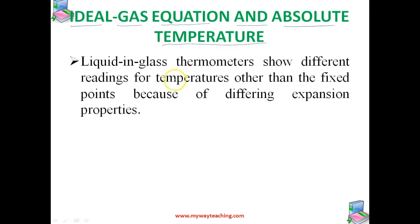Liquid in glass thermometers show different readings for temperatures other than the fixed points because of different expansion properties. A thermometer that uses a gas, however, gives the same readings regardless of which gas is used. Many experiments show that all gases at low densities exhibit the same expansion behavior — whatever the gas, at low density they will expand to the same volume.